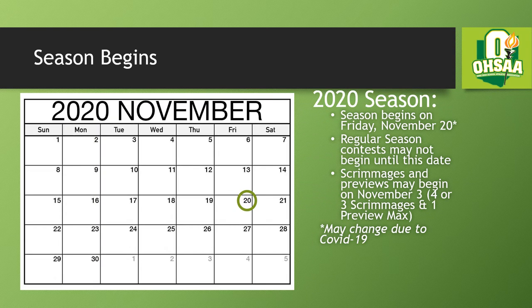While practice may begin on October 30th 2020, the 2020-21 regular season is slated to begin on Friday November 20th. Please remember the four-day acclimation period must be observed starting with the first day of practice on October 30th. Scrimmages can be played starting on November 3rd, but no regular season contest can be played until November 20th. If any regular season contests are scheduled prior to the 20th, penalties will apply. Please note, any dates set forth for the 2020-21 school year are certainly tentative due to the COVID-19 pandemic.